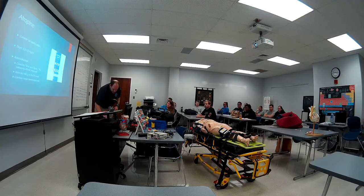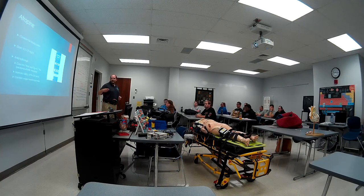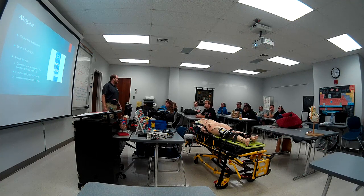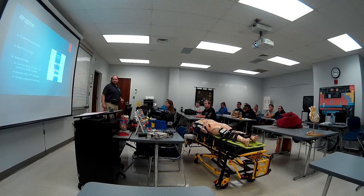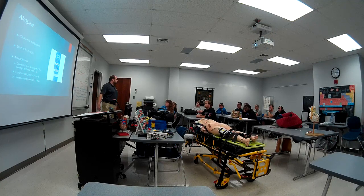Atropine is an anticholinergic. You've learned about the cholinergic — rest and digest — side of the nervous system. When you give atropine, you're countering that. You're waking the system up. It's going to increase the firing of the SA node specifically, and it's going to counter vagus nerve responses. If somebody stimulates their vagus nerve and goes into bradycardia, atropine can help counter those vagal responses. Because it increases firing of the SA node, it can counter the vagus nerve response and increase the heart rate.